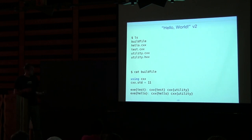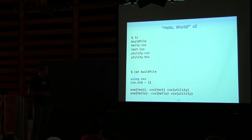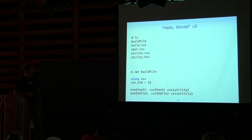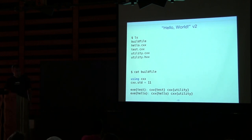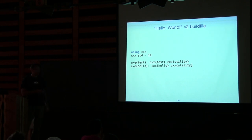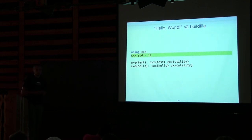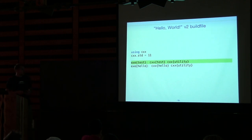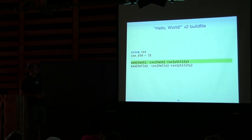Let's develop version 2 of our Hello example. Here we factor the hello-saying code into a utility file and add a test. This is our build file — first line we've already seen. The second line: I want to use C++11, so I set the standard in a compiler-independent way. The last two lines are similar to before — now we have a test and a hello example, and we added a utility file.